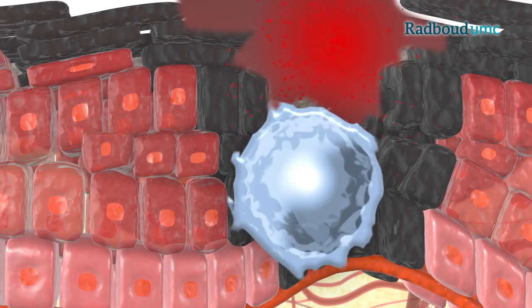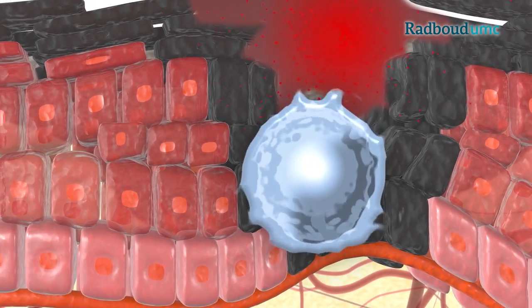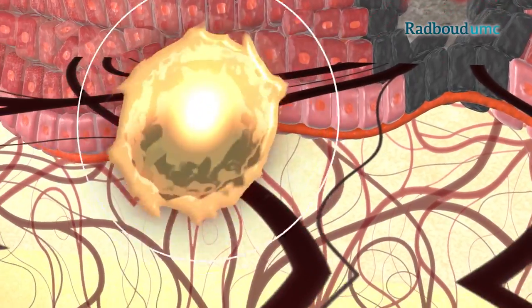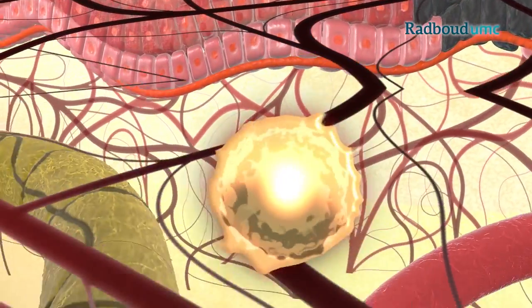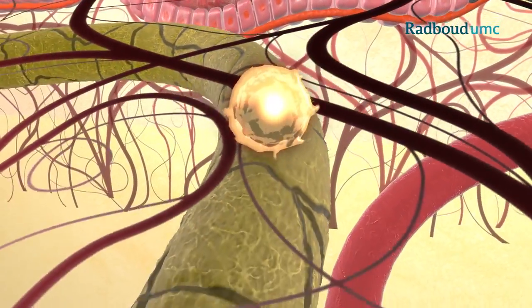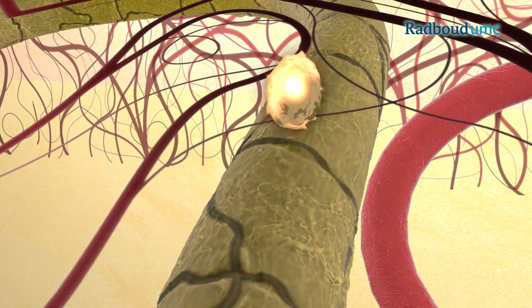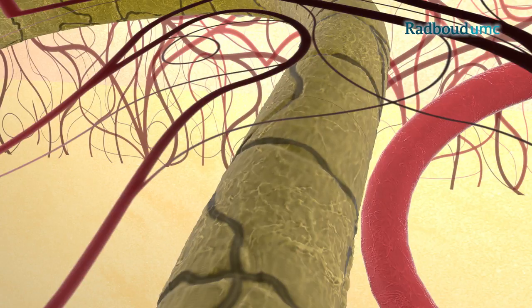After taking up a tumor sample, the dendritic cell gets activated, which leads to a fundamental change in the appearance of the cell. Furthermore, the cell stops scanning the tissue and starts to move to the lymph node, a specialized organ of the immune system dedicated to training killer T cells.